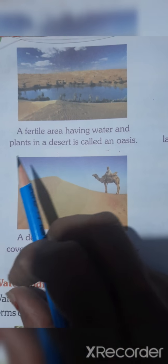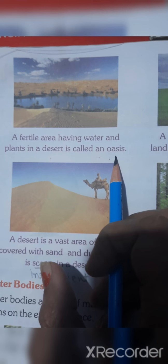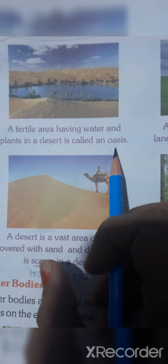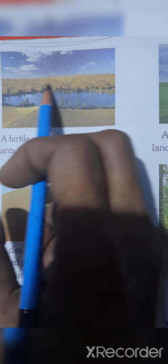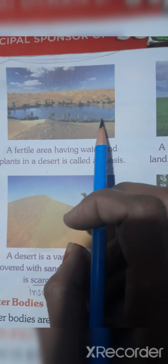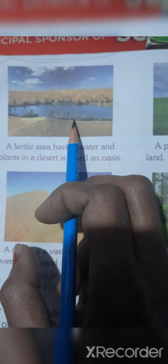A fertile area having water and plants in a desert is called an oasis. It is part of the desert.